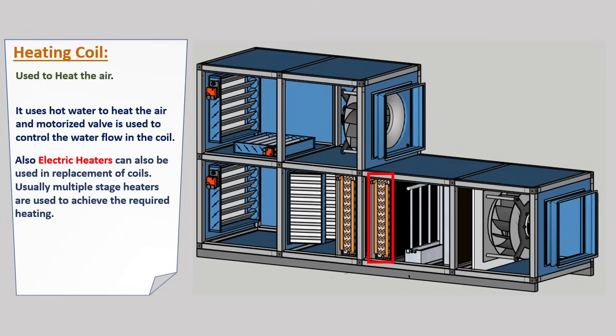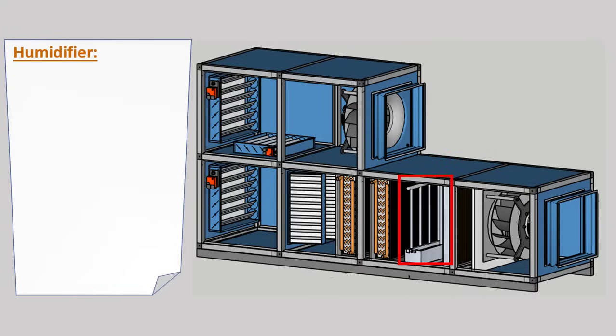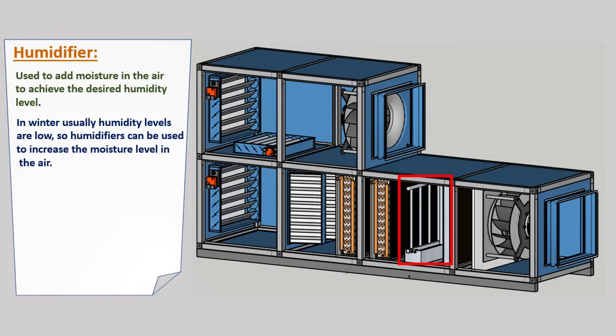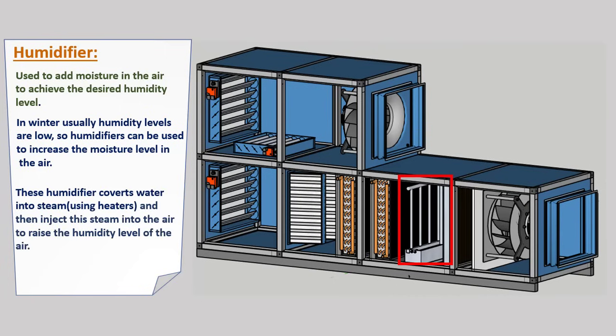After the heating coil, we have a humidifier, used to add moisture to the air and achieve the desired humidity level. Humidifiers are optional and are used in areas where humidity levels get very low in winter. These humidifiers convert water into steam using electric heaters and then inject this steam into the air to raise the humidity level.